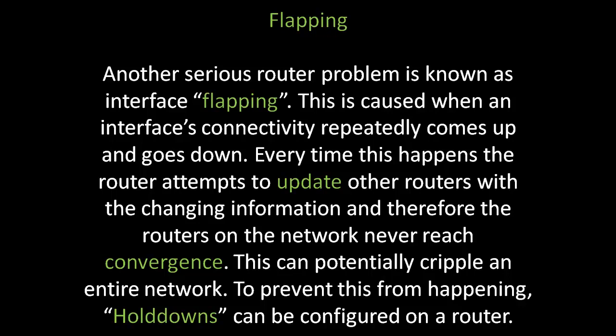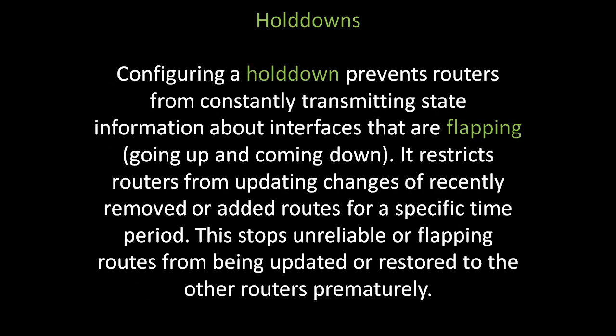To prevent this from happening, hold-downs can be configured on a router. Configuring a hold-down prevents routers from constantly transmitting state information about interfaces that are flapping — that is, going up and coming down. It restricts routers from updating changes of recently removed or added routes for a specific time period. This stops unreliable or flapping routes from being updated or restored to the other routers prematurely.